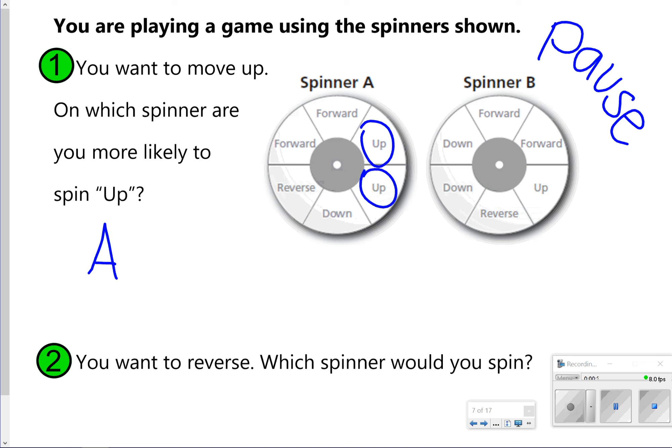For number two, you want to reverse. Which spinner should you spin? In this case, reverse is listed exactly once in each of the six sections on spinners, so either one doesn't really matter. So you could do A or B because there's the same number of reverse on each one.